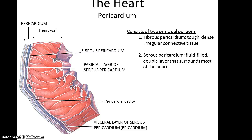The pericardium is composed of two principal portions. First is the fibrous pericardium, which is tough, dense, irregular connective tissue that helps protect the heart from rougher parts of the body surrounding it. Below that is the serous pericardium, which is fluid-filled — a double membranous layer surrounding most of the heart. Serous membranes have an outer layer referred to as the parietal layer, and an inner layer running along the organ referred to as the visceral layer, which helps protect the heart from constant rubbing against surrounding structures.